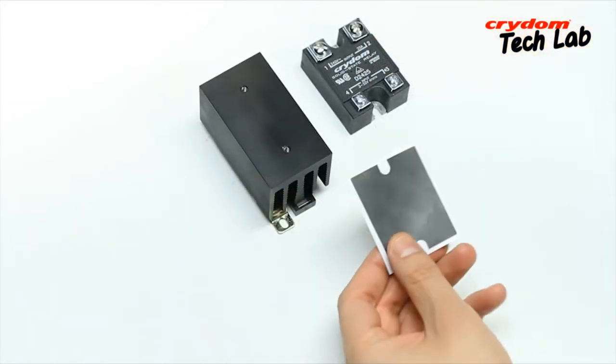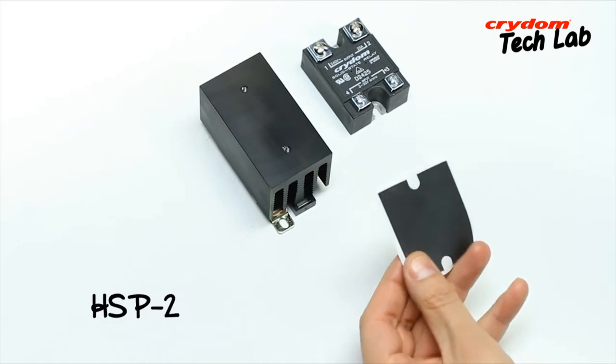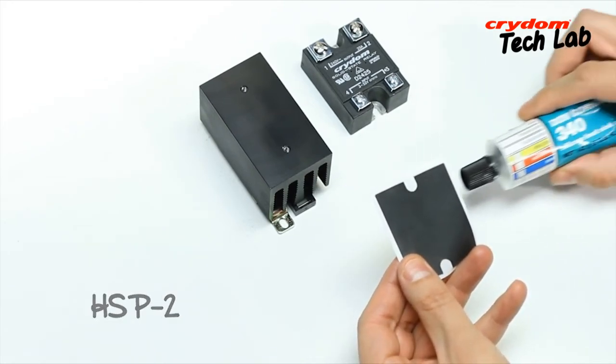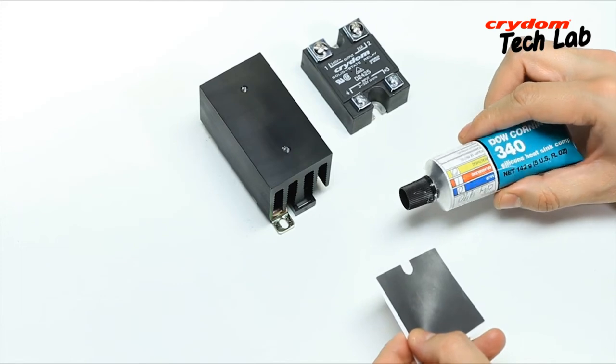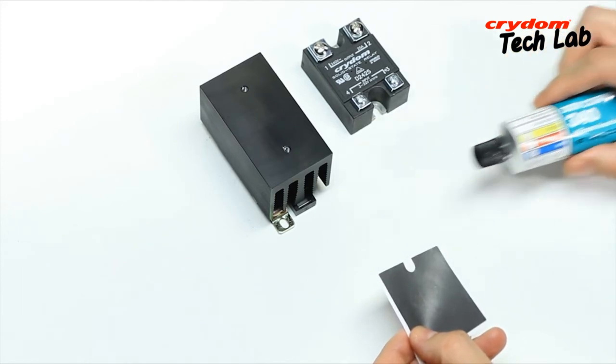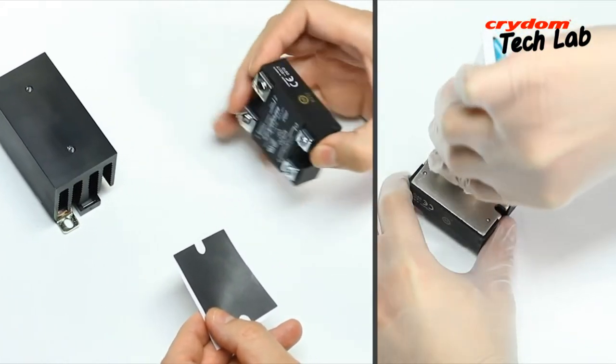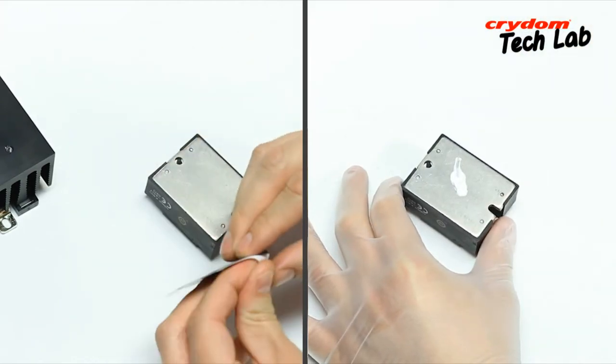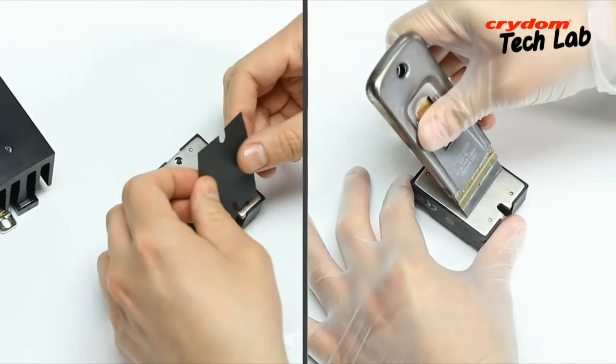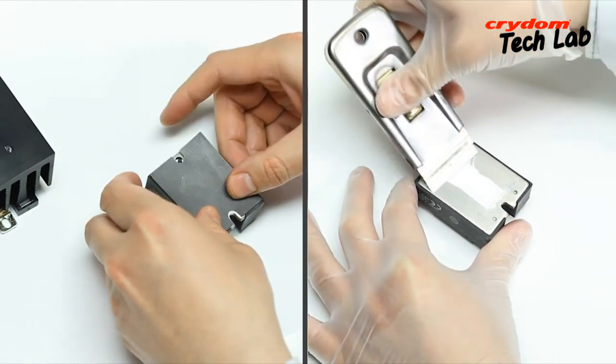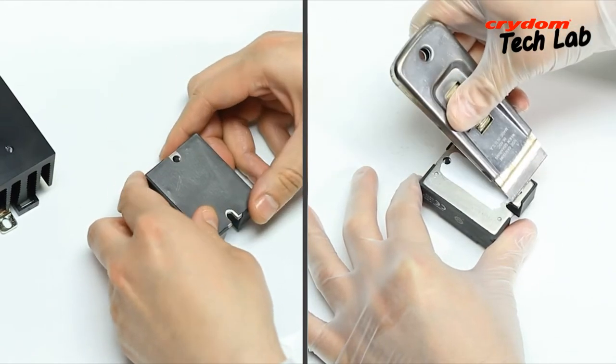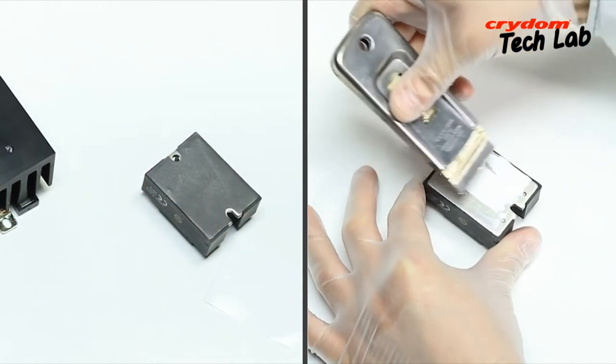This can be a pre-manufactured pad such as the Crydom HSP-2 or a thermal compound such as Dow Corning 340. Thermal pads are preferred since they offer very consistent performance and only require modest attention to installation, whereas thermal compound must be properly installed and thickness controlled very carefully.